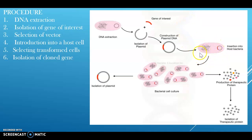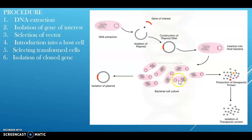Once the plasmid or vector is inserted in the host cell, it starts replicating and making copies of DNA. The next process involved in cloning is selecting the transformed cell. A specialized technique known as marker-resistant selection is performed simultaneously to select the transformed cells. With the gene of interest, an antibiotic-resistant gene is also inserted into the plasmid DNA. Cells that do not have the antibiotic gene cannot grow further, while transformed cells having the antibiotic gene can grow separately in appropriate culture media.